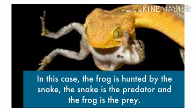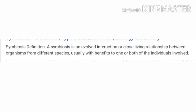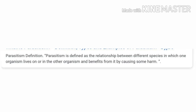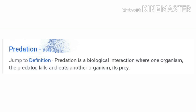Definitions summary: Symbiosis is a relationship between organisms of two different species living together with mutual benefit to each other. Parasitism is a relationship in which one organism depends on another organism for food, but the host gets no benefit. Predation is an interaction between two species in which one kills and eats the other.